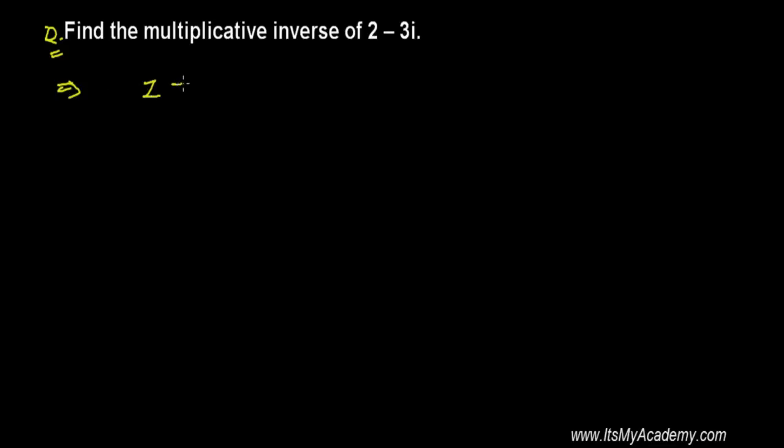Let me say this is my complex number z which is 2-3i given by the question. And multiplicative inverse is represented by z inverse, which means simply 1 over z, and it is 1 over 2-3i.